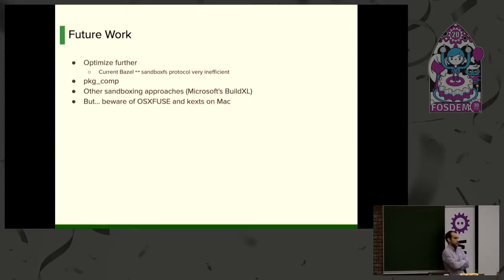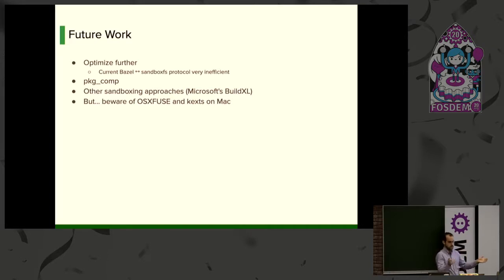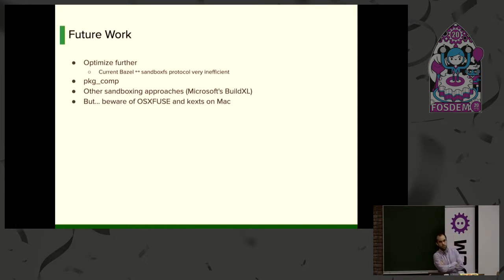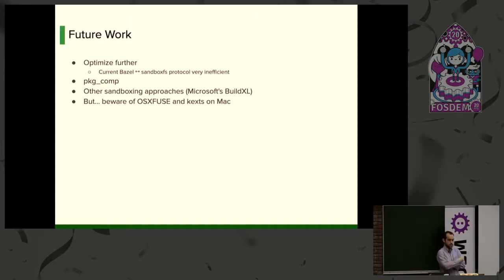This is an open source project — I would like help if anyone is interested. The main problem today is the 50% performance cost, but I'm confident it can be brought down. One issue is that the protocol between Bazel and sandboxFS is pretty inefficient and chatty, sending very large messages — that could be made smaller. I'd also personally like to integrate this with my other tool, Package Compiler, which builds software from FreeBSD package sources in a sandbox. The original idea for sandboxFS actually came from that project.